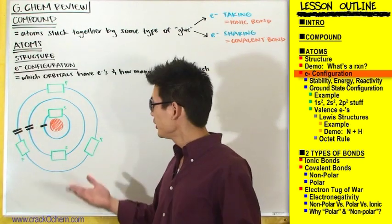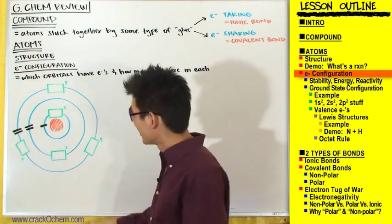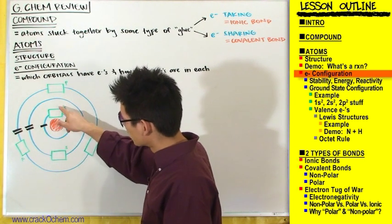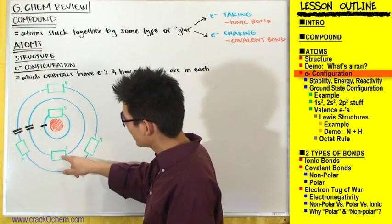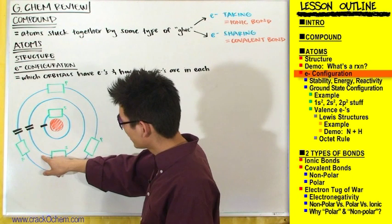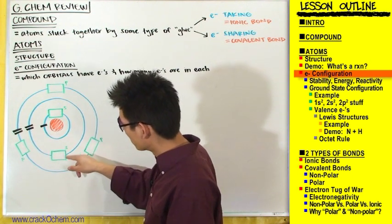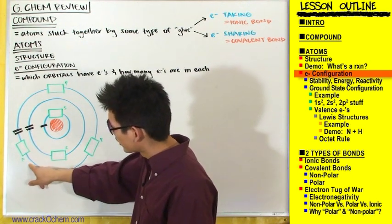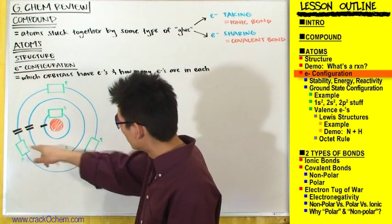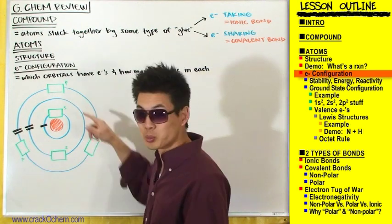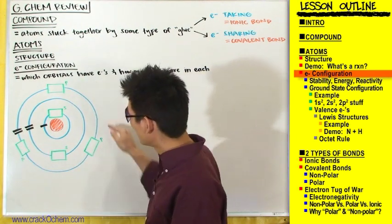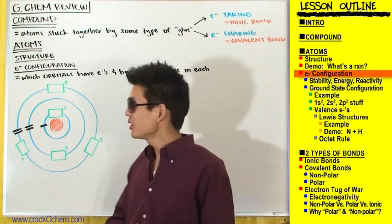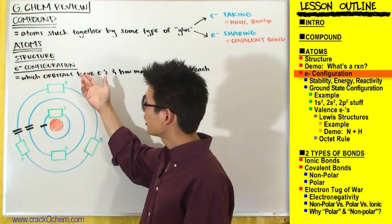The first electron ring of an energy level gets one orbital and it's an s orbital — same thing for the second energy level's first ring. It's not until you get to the second electron ring of an energy level that you get three orbitals, and those are going to be p orbitals.